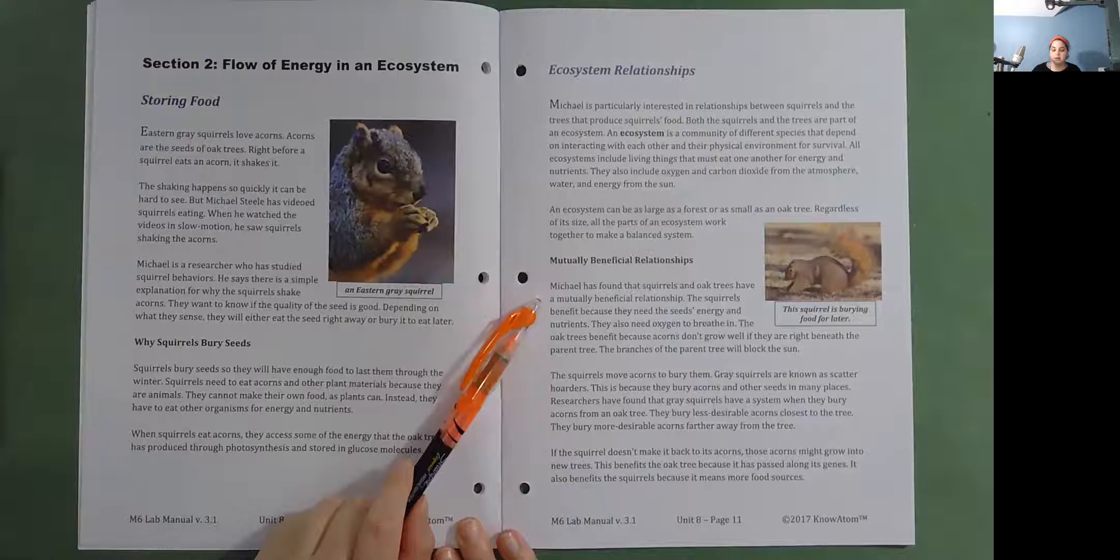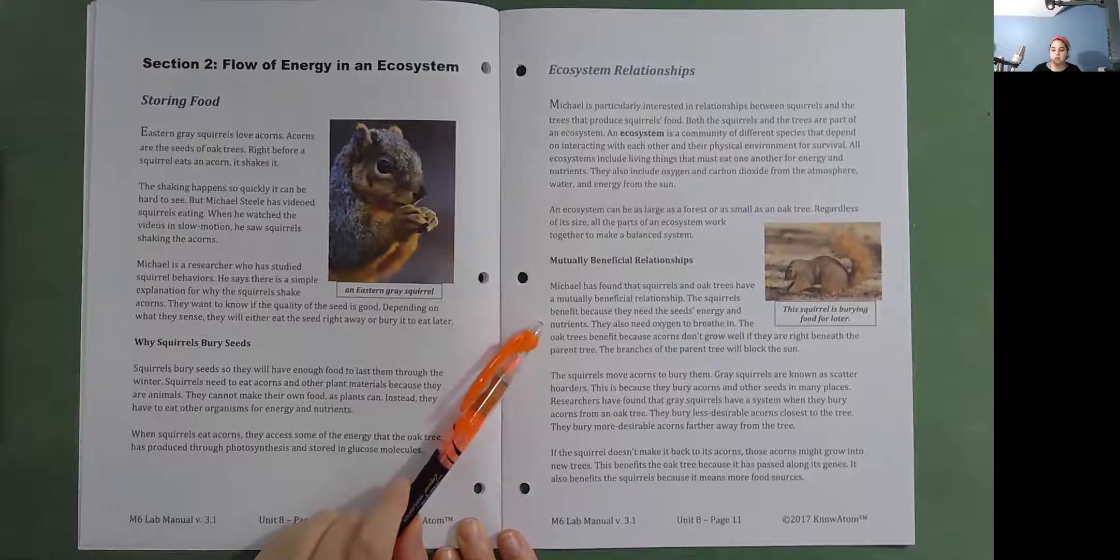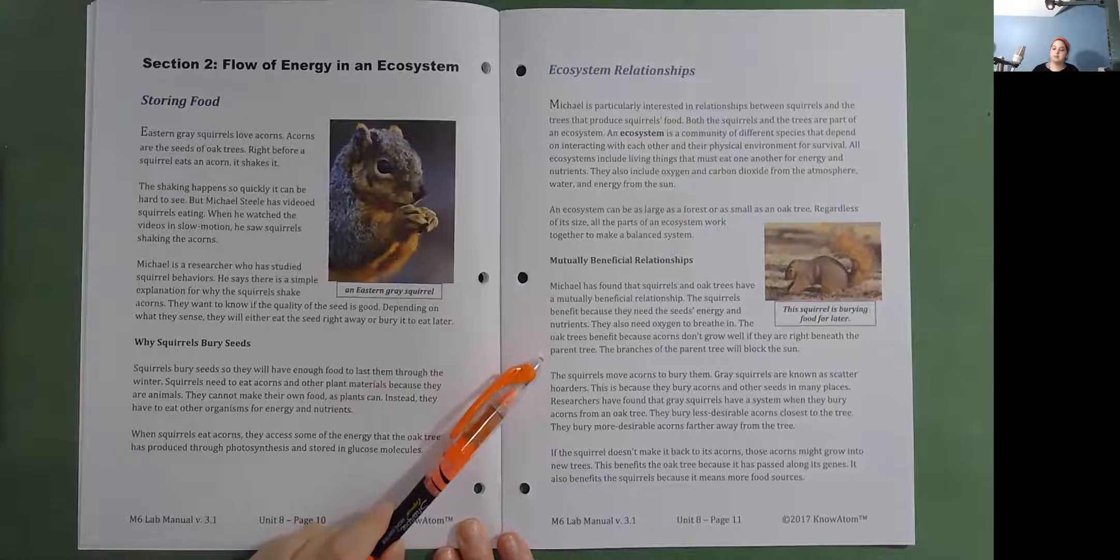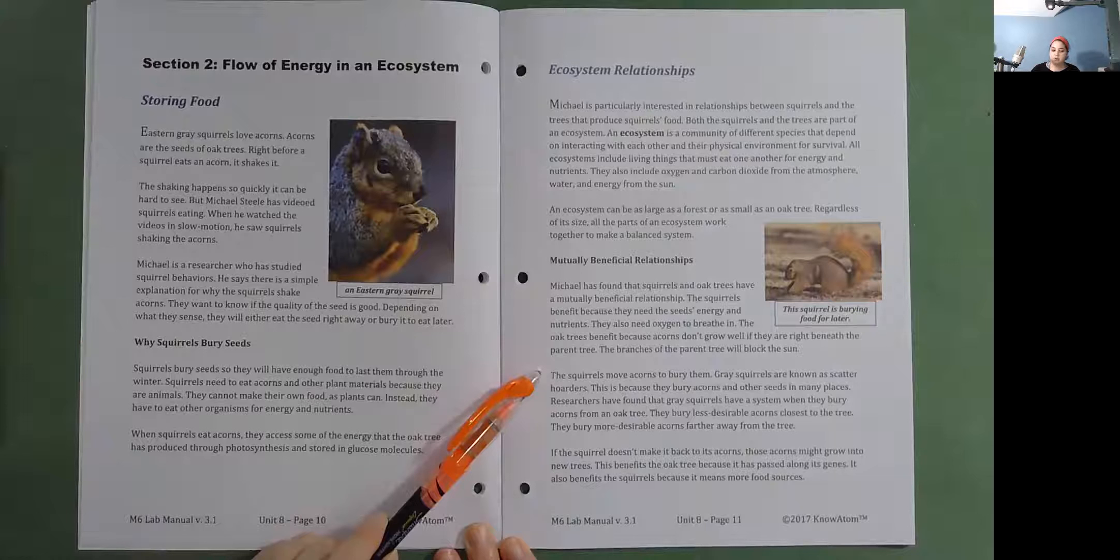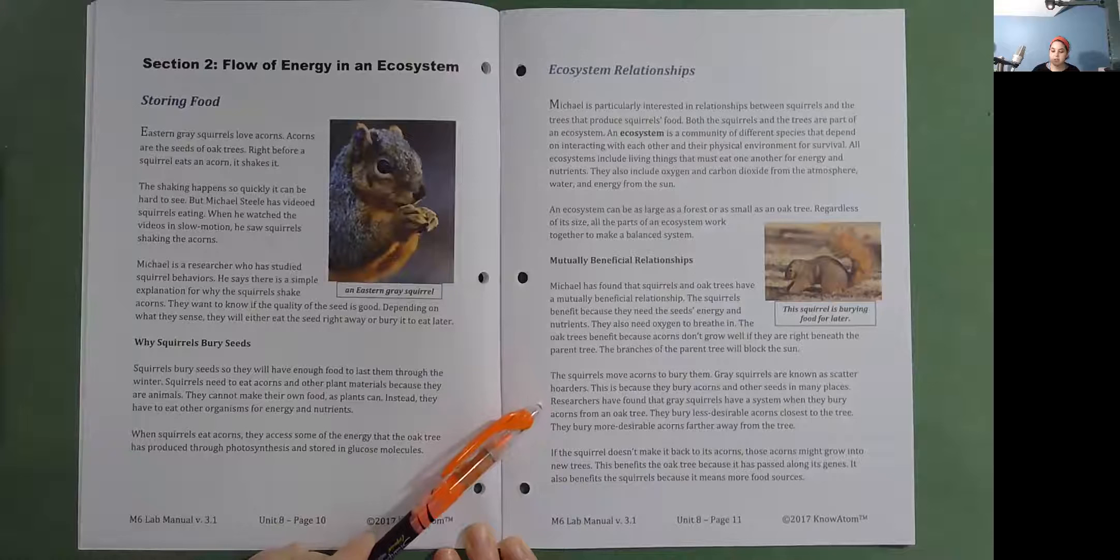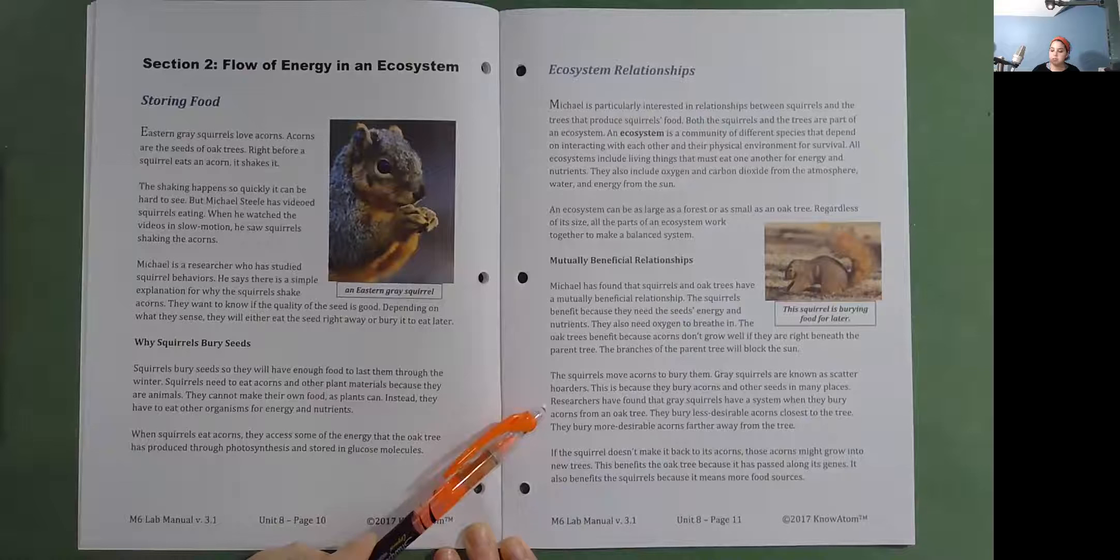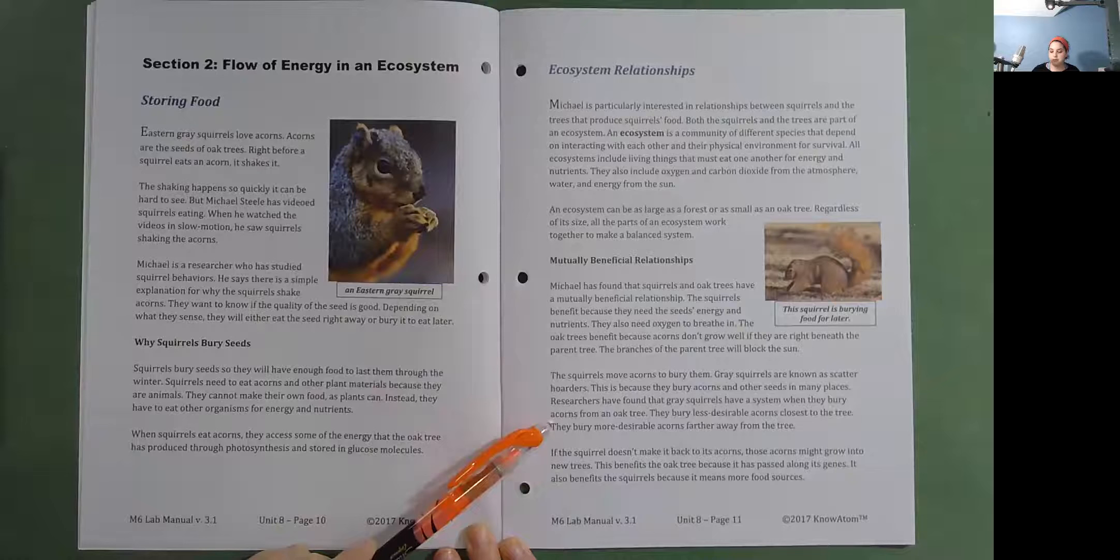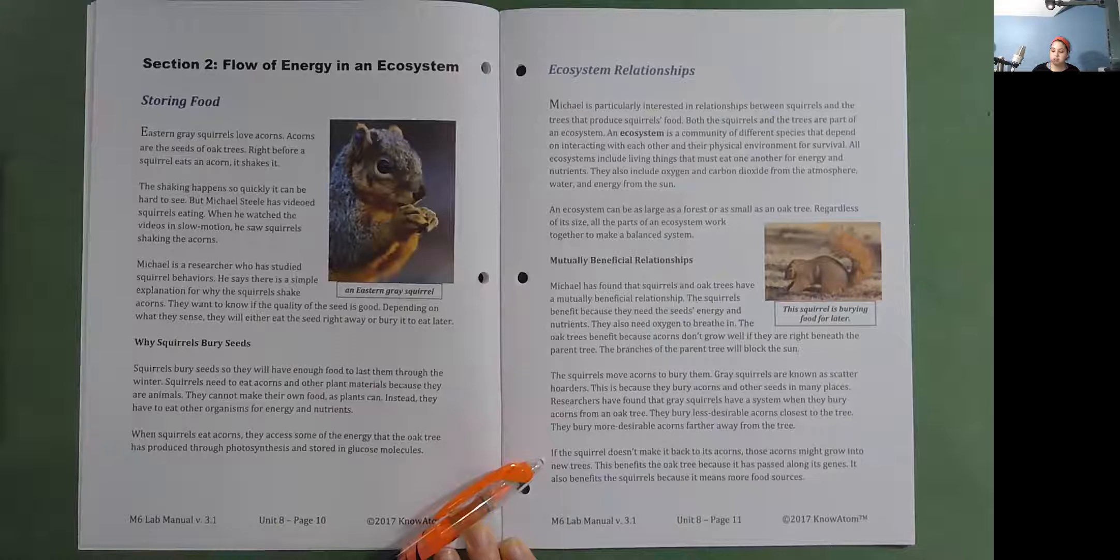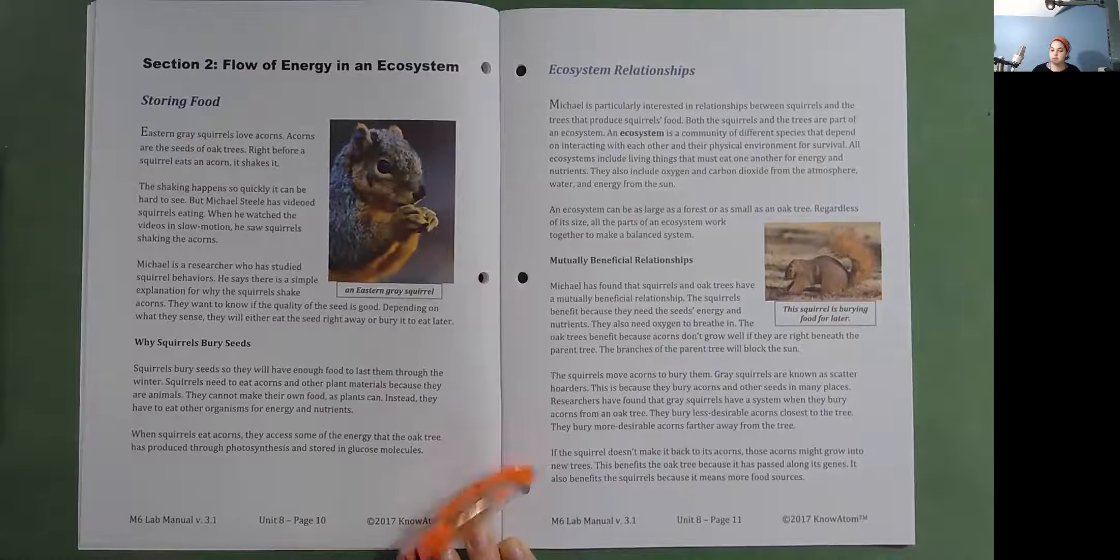Mutually beneficial relationships. Michael has found that squirrels and oak trees have a mutually beneficial relationship. The squirrels benefit because they need the seeds, energy, and nutrients. They also need oxygen to breathe in. The oak trees benefit because acorns don't grow well if they are right beneath the parent tree. The branches of the parent tree will block the sun. The squirrels move acorns to bury them. Gray squirrels are known as scatter hoarders. This is because they bury acorns and other seeds in many places. Researchers have found that gray squirrels have a system when they bury acorns from an oak tree. They bury less desirable acorns closest to the tree. They bury more desirable acorns farther away from the tree. If the squirrel doesn't make it back to its acorns, those acorns might grow into new trees. This benefits the oak tree because it has passed along its genes. It also benefits the squirrels because it means more food sources. This squirrel is burying food for later.